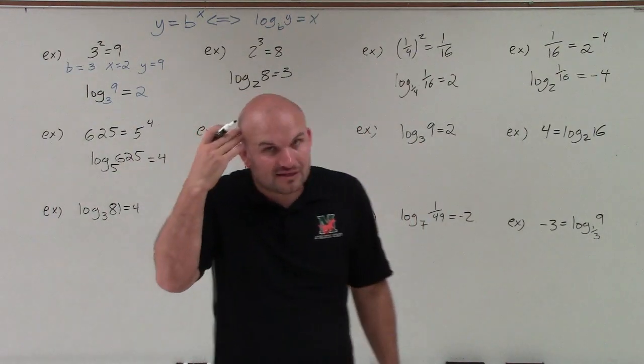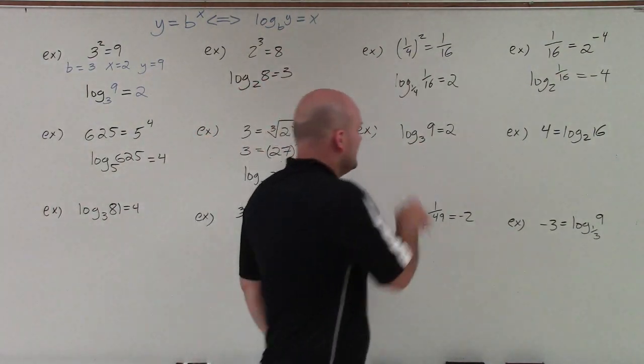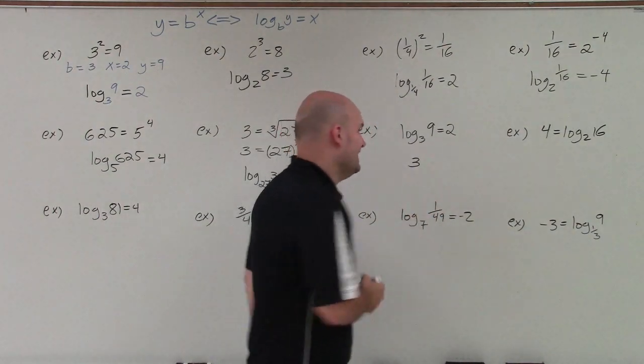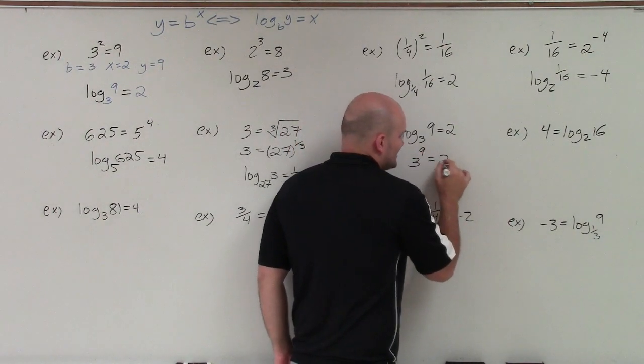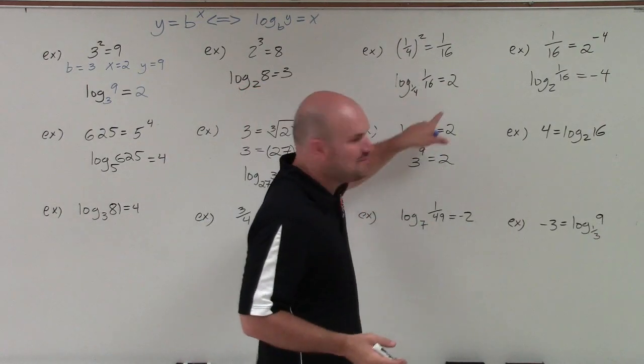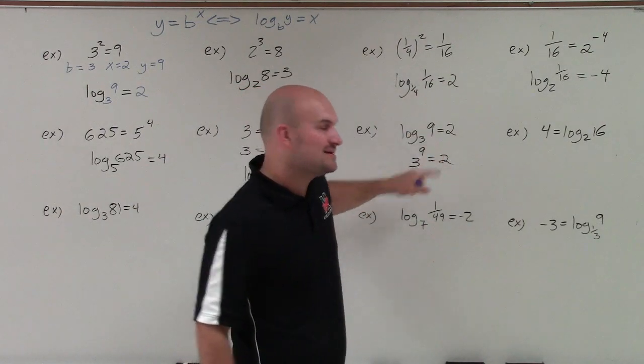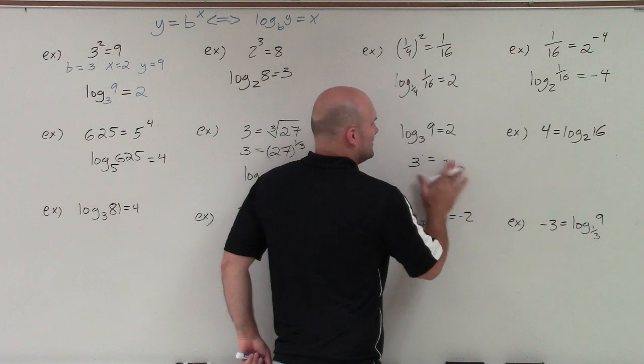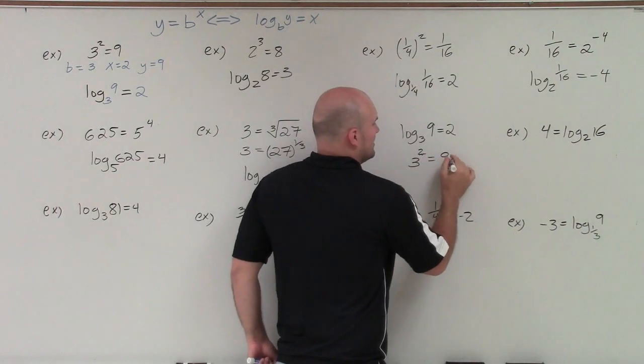So again, my main thing, though, I always like to look at is look at the base. The base is 3. So I know the base of my exponent is 3. And we should know, hopefully it makes sense, that 3 to the 9th power equals 2. That's not going to be your exponent. 3 to the 9th power is not 2. So it's going to be 3 squared equals 9.